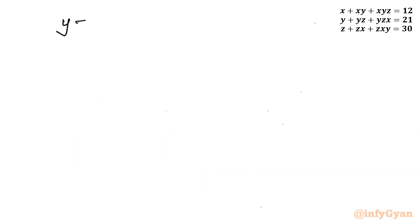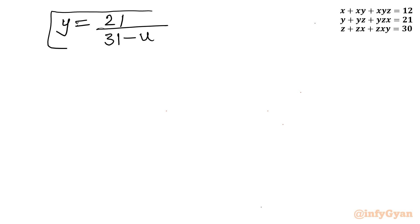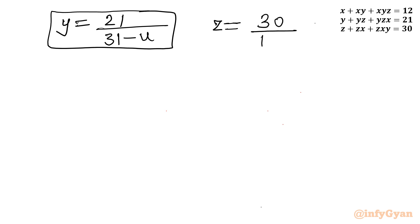Similarly, y and z can be written directly. y will become 21 over (31 minus u), and z will become 30 over (13 minus u). So we now know x, y, z in terms of u.